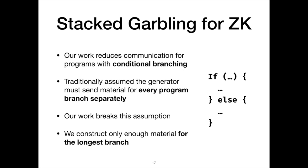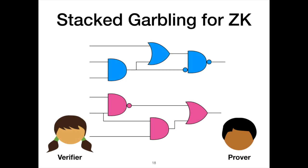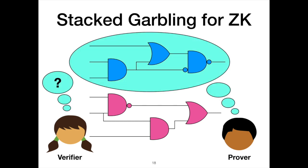We still preserve the same privacy property — Alice will not be able to tell which branch is actually executed under Bob's input. But at the same time, we only need to send enough material for the single longest branch out of any number of disjuncts. For the purposes of these slides, we'll look at two circuits. Because Bob is the prover, he has all of the inputs and therefore knows which branch is actually executed, whereas Alice the verifier does not know and should not learn which branch is taken.